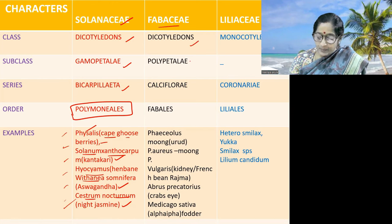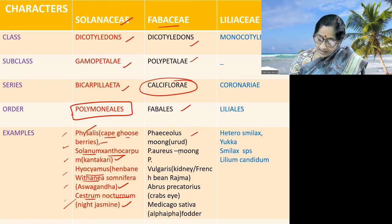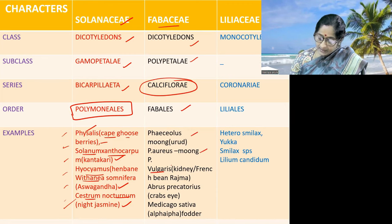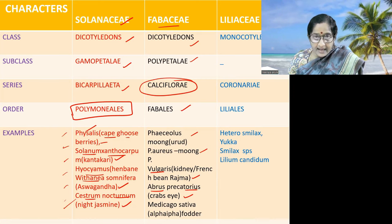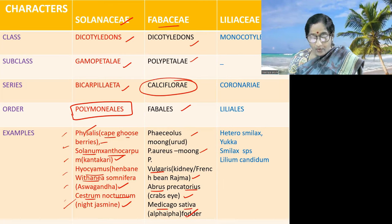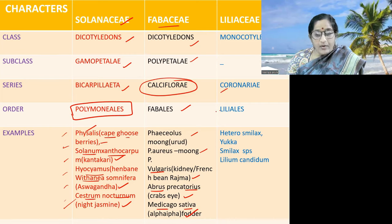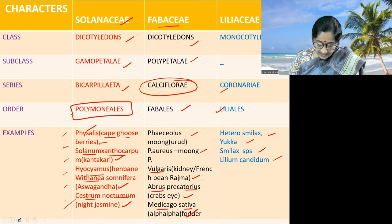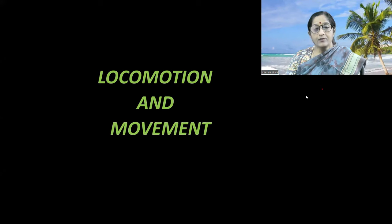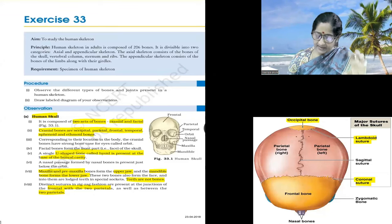Fabaceae belongs to Dicotyledons, Polypetalae, Calciflorate series, order Fabales. Examples: Phaseolus mungo, Phaseolus aureus, Phaseolus vulgaris — rajma; Abrus precatorius — crab's eye; Medicago sativa — alfalfa, used as fodder. Liliaceae members belong to series Coronariae, order Liliales. Examples: Heterosmilax, Yucca, Smilax species and Lilium candidum.